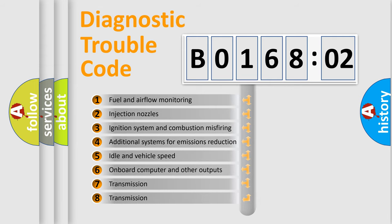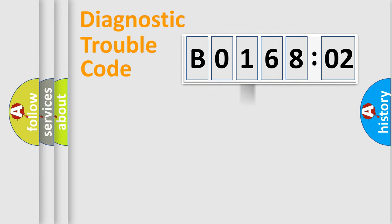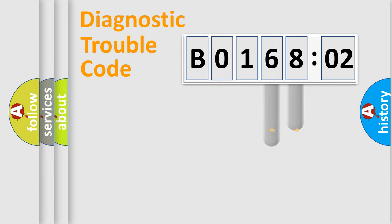The third character specifies a subset of errors. The distribution shown is valid only for the standardized DTC code. Only the last two characters define the specific fault of the group.